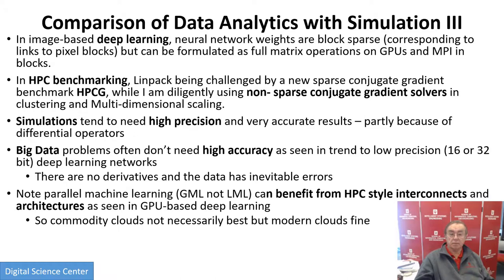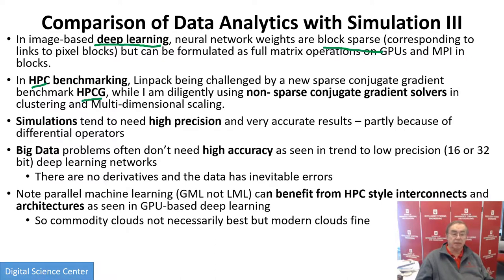Deep learning is effectively a full matrix because it's block-sparse — it is sparse in terms of blocks of things interacting with each other, but within a block it's a full matrix, which can then exploit the GPU. The HPC field is moving from full matrix algorithms to sparse matrix algorithms — HPCG — but the non-sparse version of that conjugate gradient solver is what I use in a lot of my big data analytics, looking at problems where every point is connected to every other point as in the gene sequence problem.